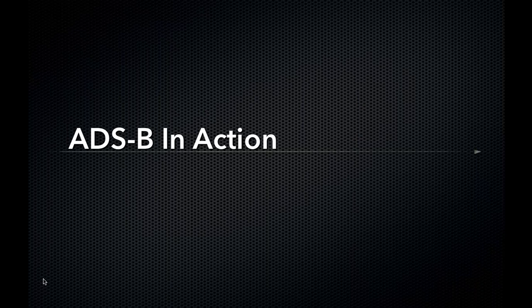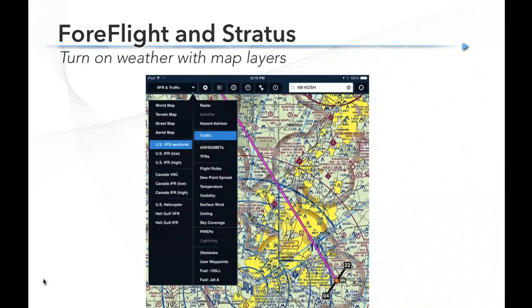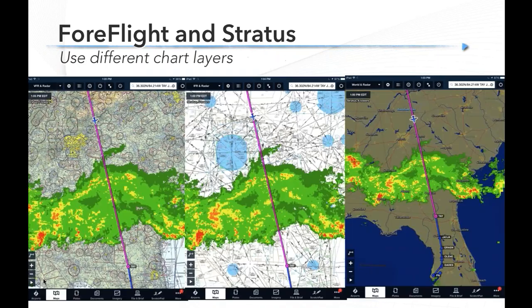Given the poll results, let's look at what this looks like in the cockpit using ForeFlight and Stratus. You turn on Stratus, connect it to your iPad, and fire up ForeFlight — it's just another weather source. The way you use ForeFlight doesn't change. Go into the maps page, turn on map overlays, and look at radar, TFRs, flight rules, PIREPs, whatever you need.